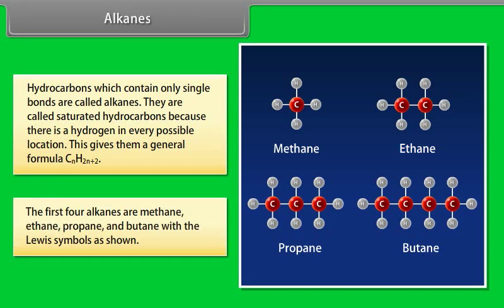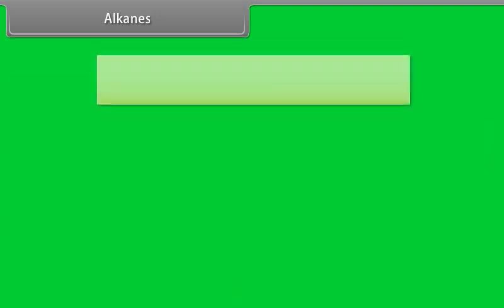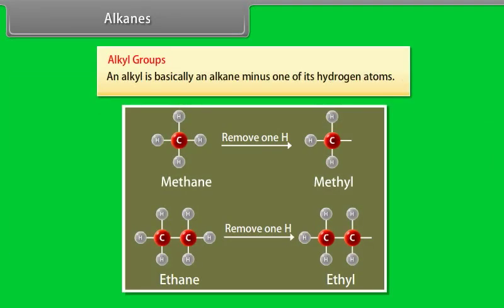Alkyl groups: An alkyl is basically an alkane minus one of its hydrogen atoms. For example, if methane removes one hydrogen, we will get methyl. Similarly, if ethane removes one hydrogen, we will get ethyl.